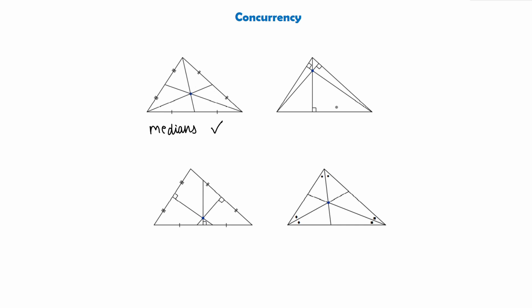For the next diagram we have the three altitudes of a triangle. Remember, the altitude goes from a vertex and meets perpendicularly with the opposite side. So we have the three altitudes of a triangle and as we can see they all pass through the same point — so we say that the altitudes of a triangle are also concurrent.